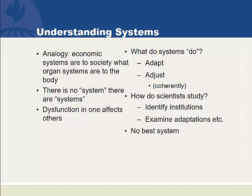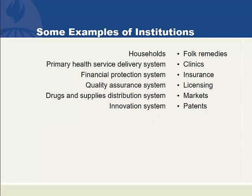Let's give more examples of institutions. Households have rules and norms of folk remedies where they will perhaps give honey and lemon tea when someone gets a cold, or they'll buckle up their overcoat when the wind is blowing. Many beliefs and unwritten rules about how to stay healthy exist in our households. In the primary health service delivery system, the idea that there should be a place called the clinic is an institution.